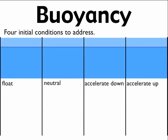When looking at buoyancy, there are a couple of different conditions. The object could float on the surface, or it could be neutrally buoyant — just suspended in the water, not moving up or down, completely underwater. Or it could be accelerating down toward the bottom, or accelerating up toward the top.